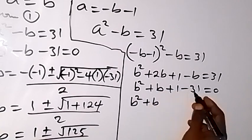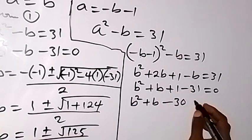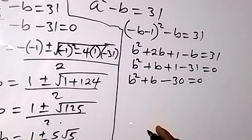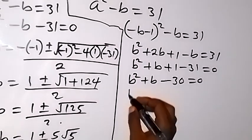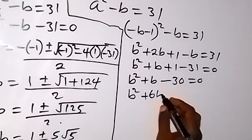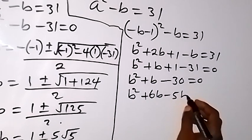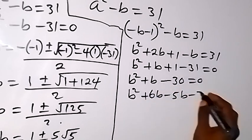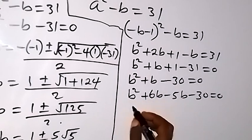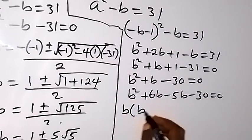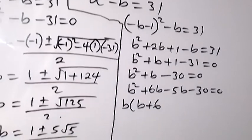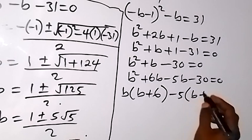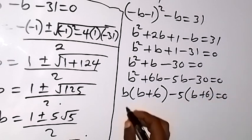This gives b² plus b minus 30 equals 0. We factorize by splitting the middle term: b² plus 6b minus 5b minus 30 equals 0.